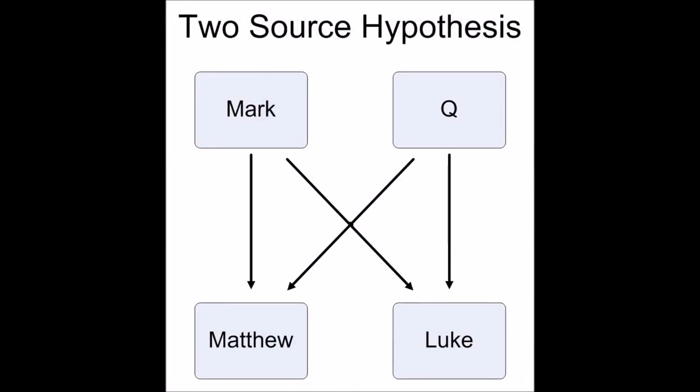The two-source hypothesis was first proposed in 1838. It has been the subject of prolonged and intensive scholarly attention. It is by no means the unanimous opinion of scholars, but does remain the majority view. Despite this lack of consensus, the study of Q has become a scholastic discipline in its own right. Scholars in the field have reconstructed Q from the double tradition material, have analysed it in detail, and have identified chronological layers of its development.